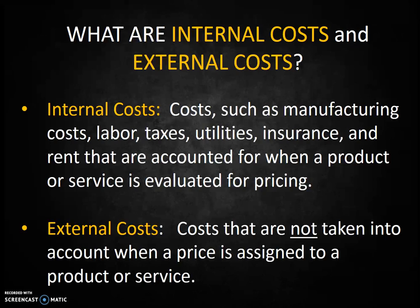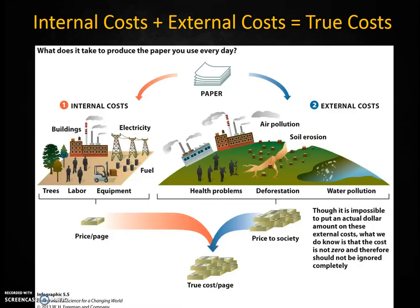External costs, on the other hand, are costs that are not taken into account when a price is assigned to a product or service. These are costs that have been shifted to someone other than the producer or the consumer of the product — somebody outside the transaction is paying these costs. Let's flip back to Infographics 6.5. This infographic shows all the costs that are incurred during the production of paper. Those on the left are the internal costs that are actually included in the market price for paper. Those on the right are external costs that are paid for by people outside of the transaction — paid for by people, societies, the environment, animals, that are never going to buy or sell or use the paper. If all those external costs were included in the price of paper, maybe we'd use less paper.